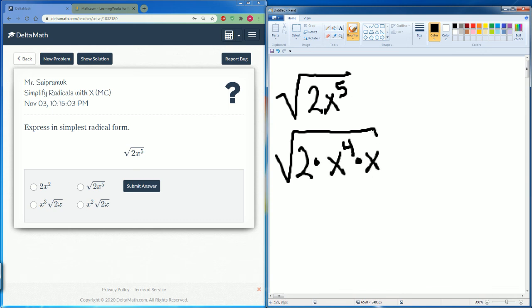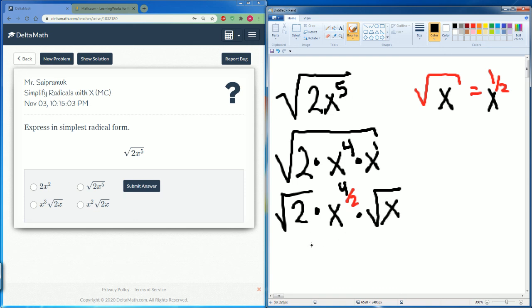You're going to see why, because remember the radical is the same thing as x to the one-half. Nothing happens to the radical 2 times x to the 4 is going to be divided by 2, and then this is going to be multiplied by radical x. So x to the 4 divided by 2 is just 2.